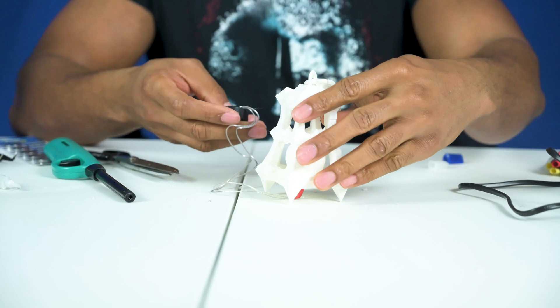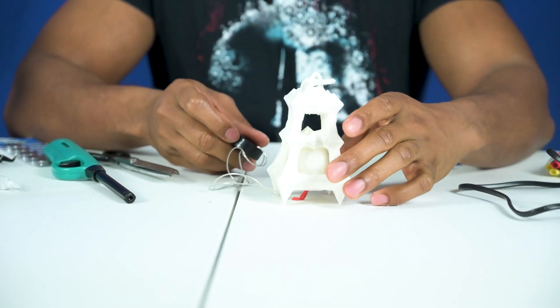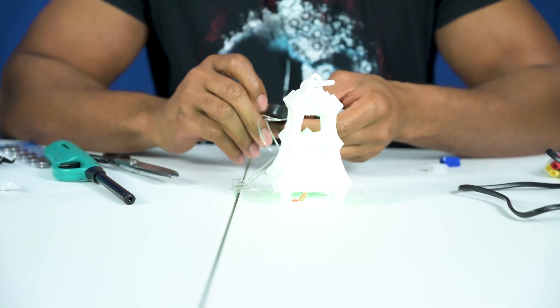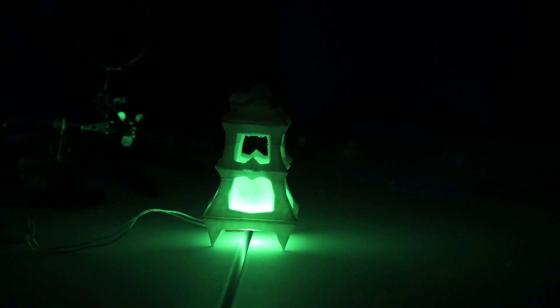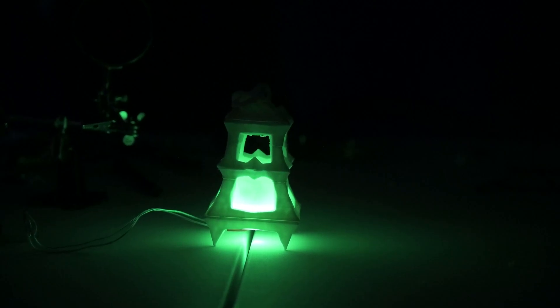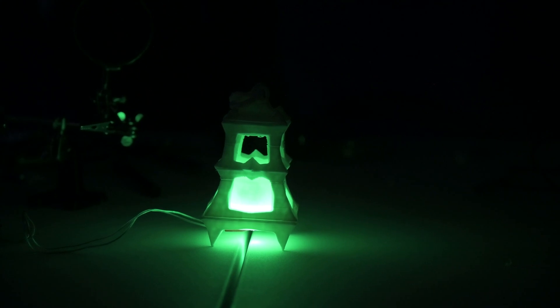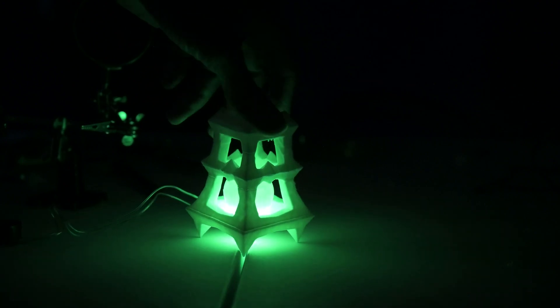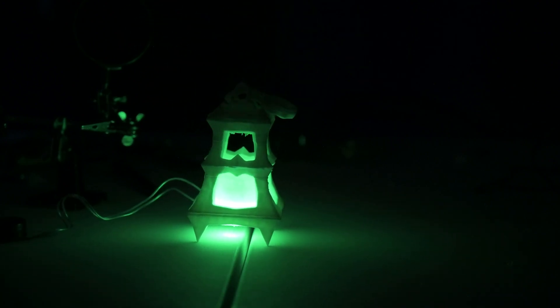Now we have our glow in the dark Thresh lantern. All right, so here is Thresh's lantern. As you can see, glowing in the dark. It looks awesome, just needs to be painted and maybe primed, all that good stuff, but overall, it's done. Go ahead and spin it around for you guys so you can see from all angles. That's what it looks like in the dark.